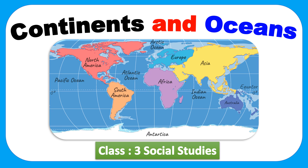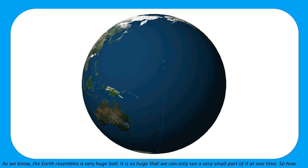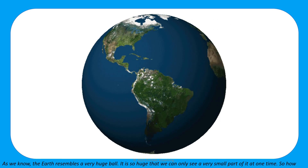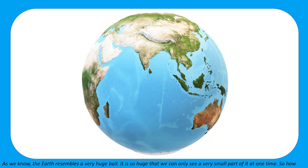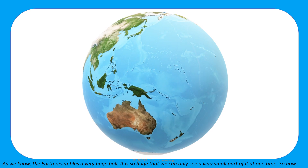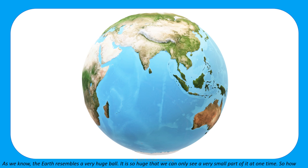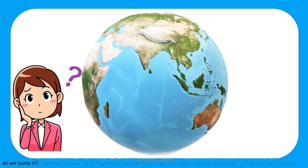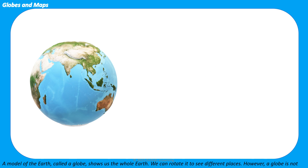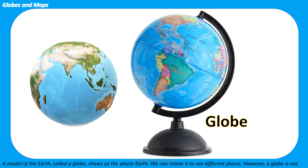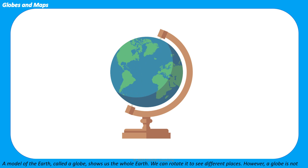Continents and oceans - Class 3 social studies. As we know, the earth resembles a very huge ball. It is so huge that we can only see a very small part of it at one time. So how do we study it? A model of the earth called a globe shows us the whole earth, and we can rotate it to see different places.